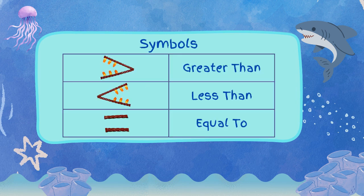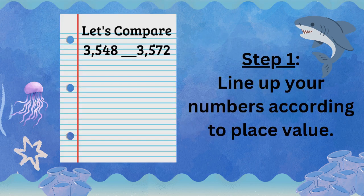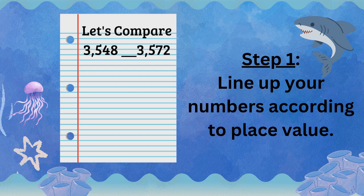Here are all the symbols that you need in order to compare two four-digit numbers. You need to know how to make the symbols and how to say the words that go with each symbol. Now that you know what the symbols look like, we just need to figure out which number is the greatest. So step one, grab a piece of notebook paper and you're going to line up your numbers according to place value.